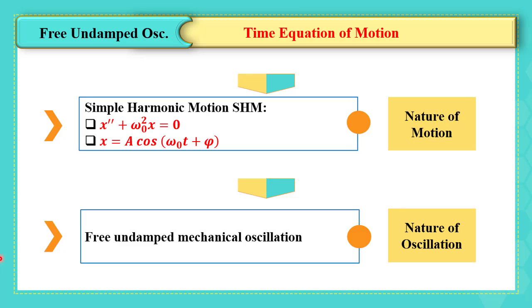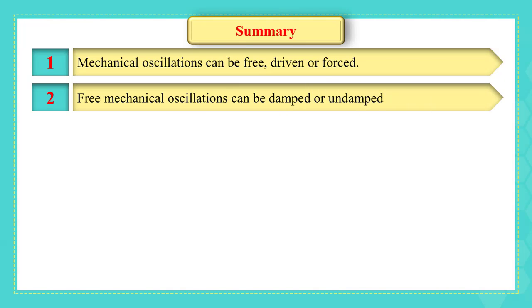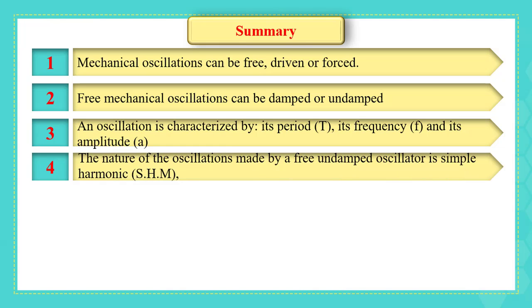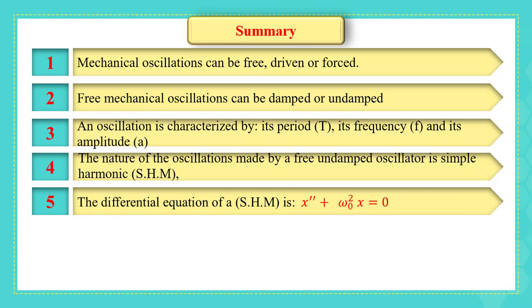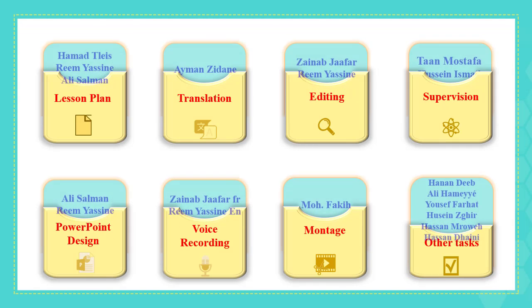In the next video, we are going to define more the simple harmonic motion and its characteristics. To sum up: mechanical oscillations can be free, driven, or forced. These oscillations can be damped or undamped, and are characterized by period, frequency, and amplitude. The nature of oscillations made by an undamped oscillator is simple harmonic, and the differential equation is given by x double prime plus omega 0 squared x equals 0, where the time equation is given by x equals a sine or cosine (omega 0 t plus phi). This is the end of the second part. Thank you for your attention.